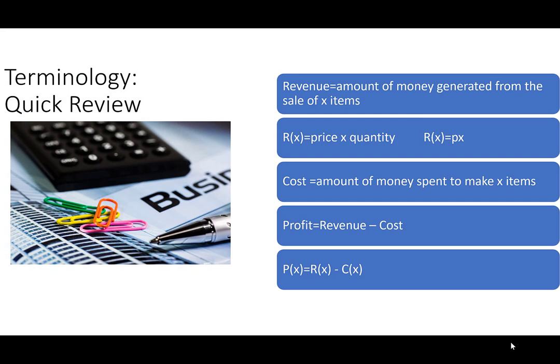Revenue is the amount of money generated from the sale of X items, so we remember that's equal to price times quantity. We write that as R(X) = P × X. Cost is the amount of money spent to make the items, and profit is the revenue minus the cost, so P(X) = R(X) - C(X). It's super important that you put the R(X) first and put the C(X) in parentheses when finding the profit.